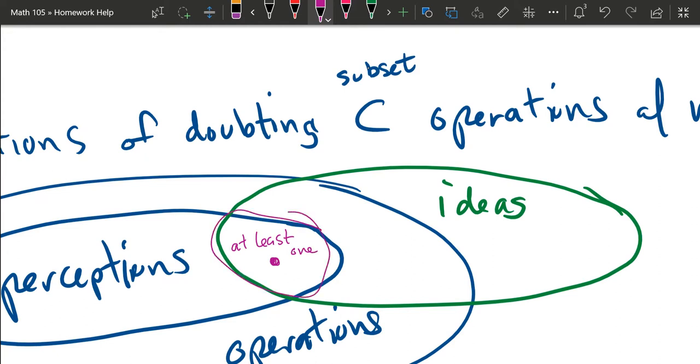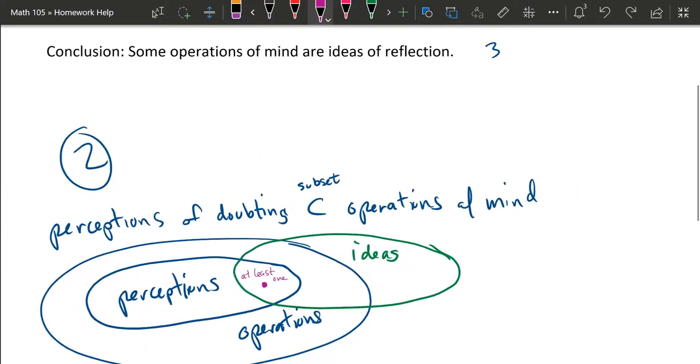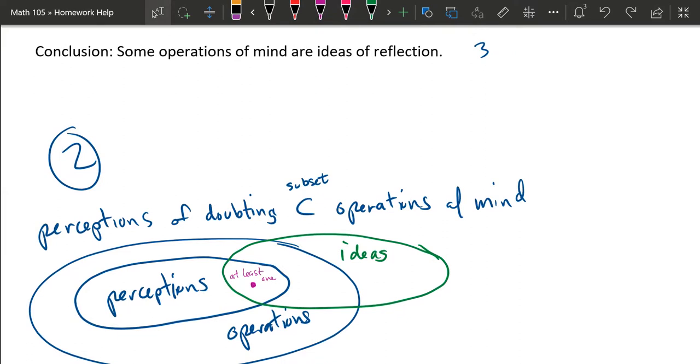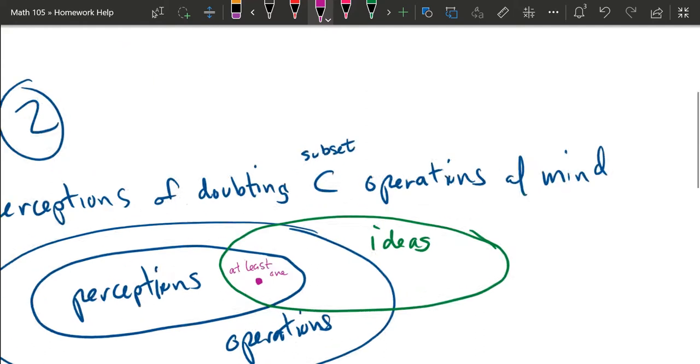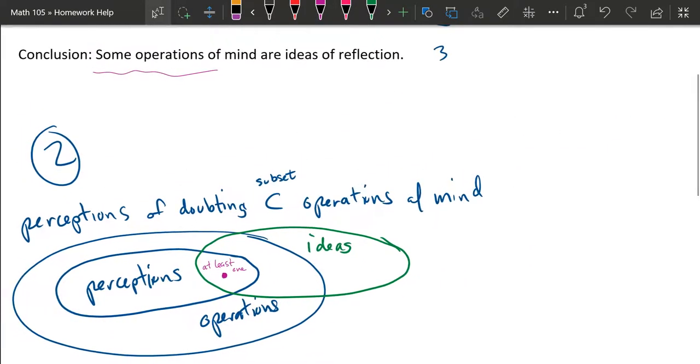Because it's in this intersection and the entire set of perceptions is inside the operations, that means this one right here has to, because it's inside perceptions, also has to be inside operations. So now we can look at the conclusion. It says some operations are ideas. So how many operations have to be ideas in order for this conclusion to be true? It's just one operation has to be an idea. And look at that. We have at least one right there in the middle. So this one operation is also an idea. And so the answer to this one is true.